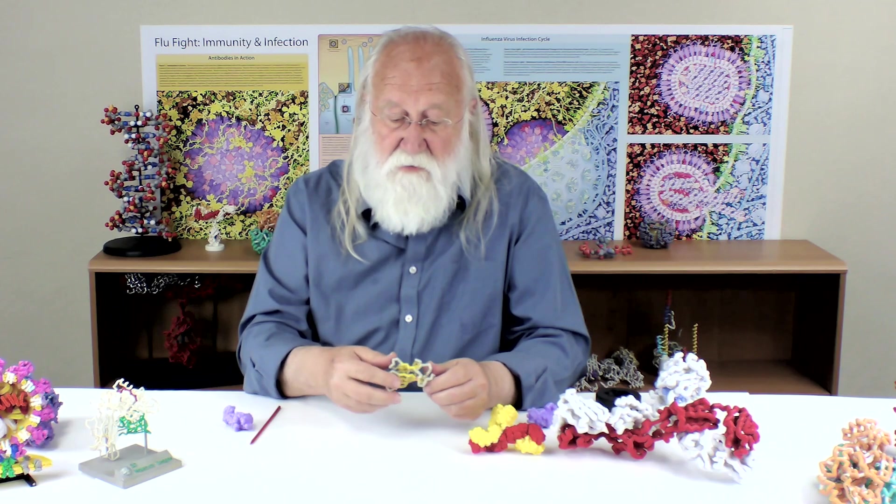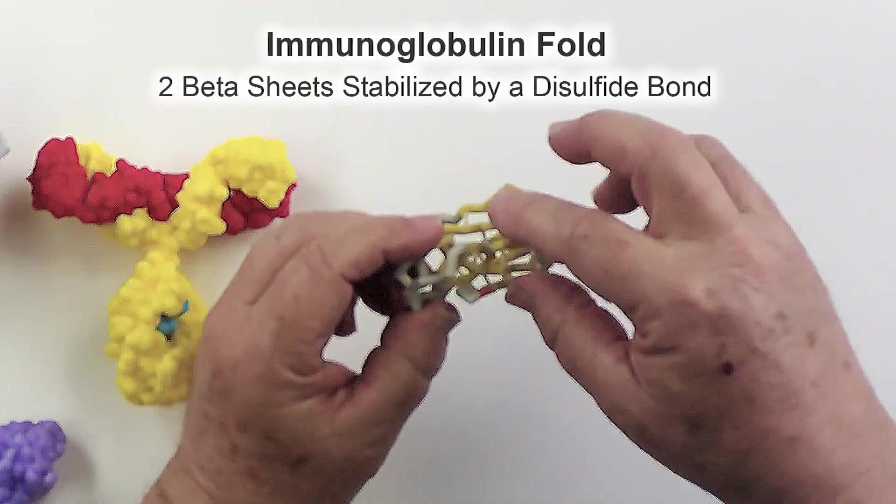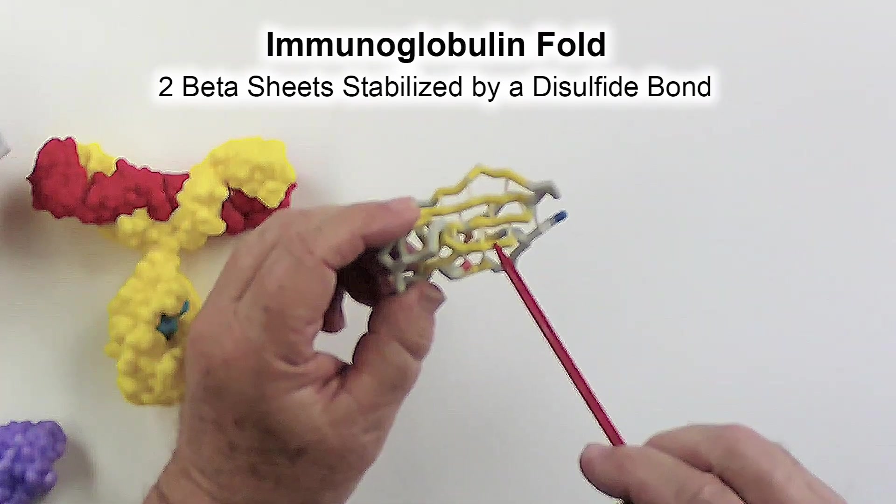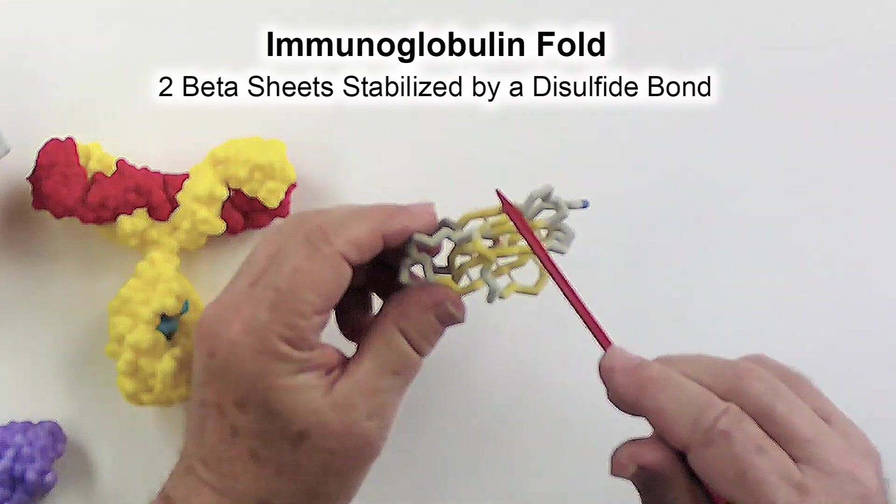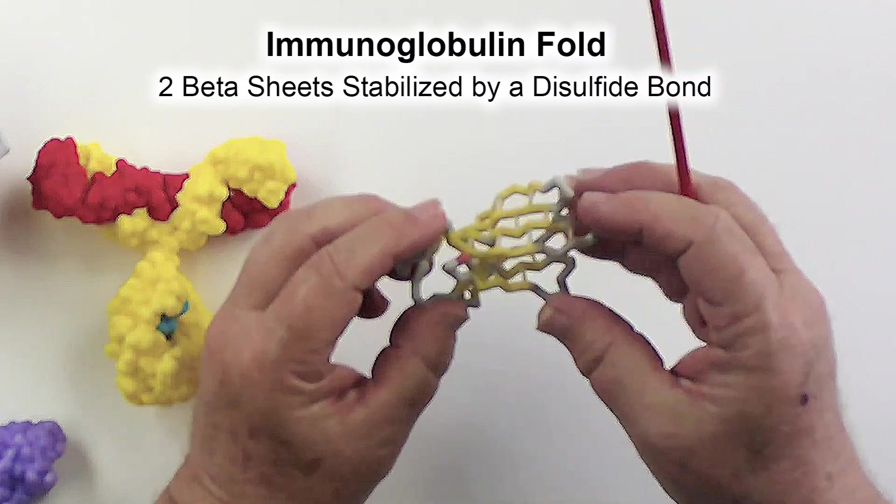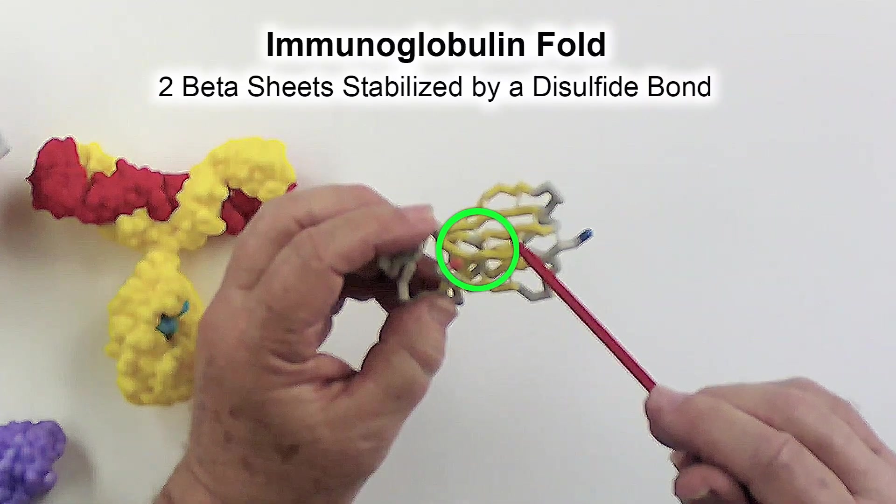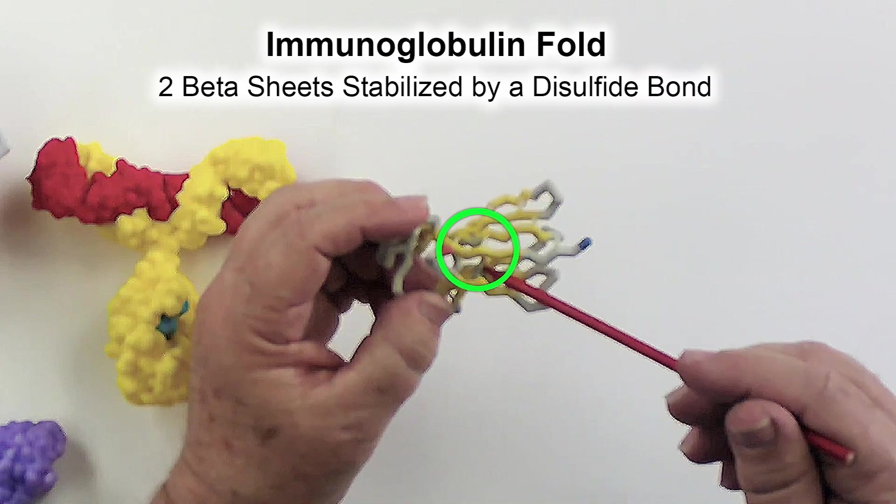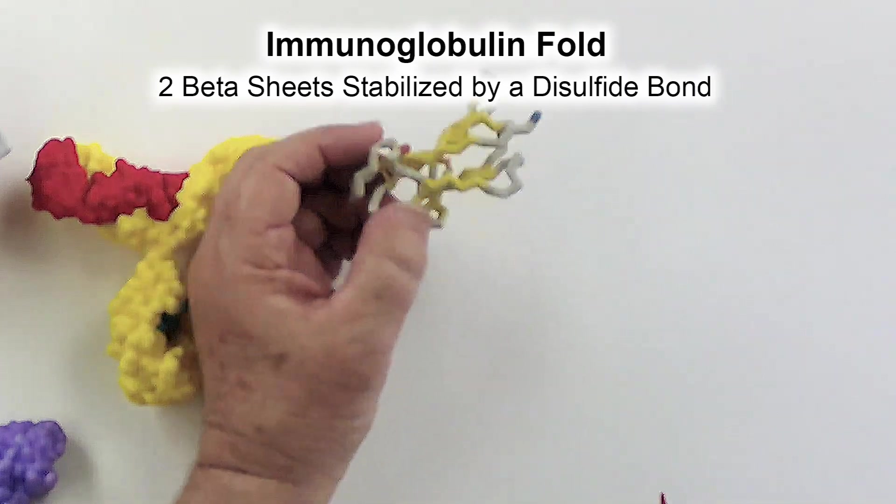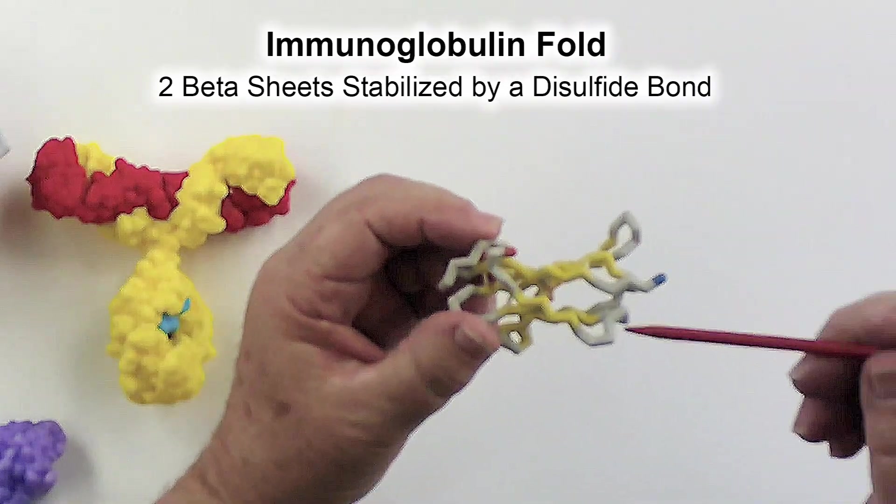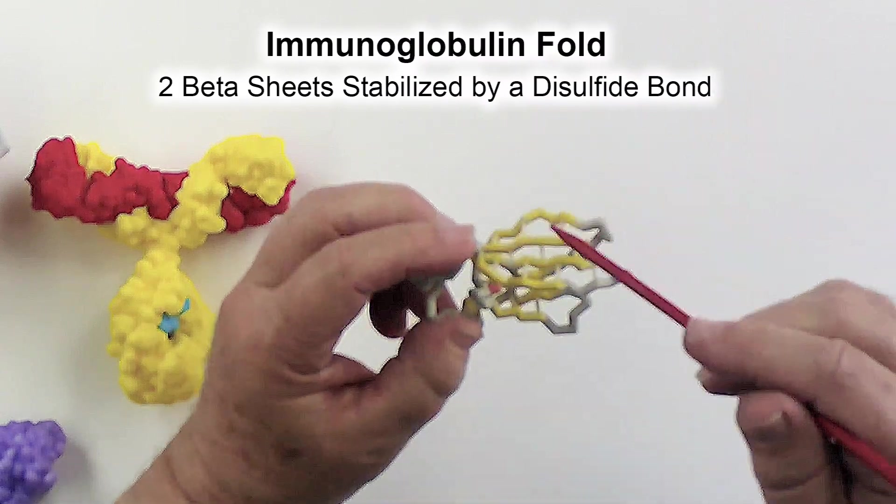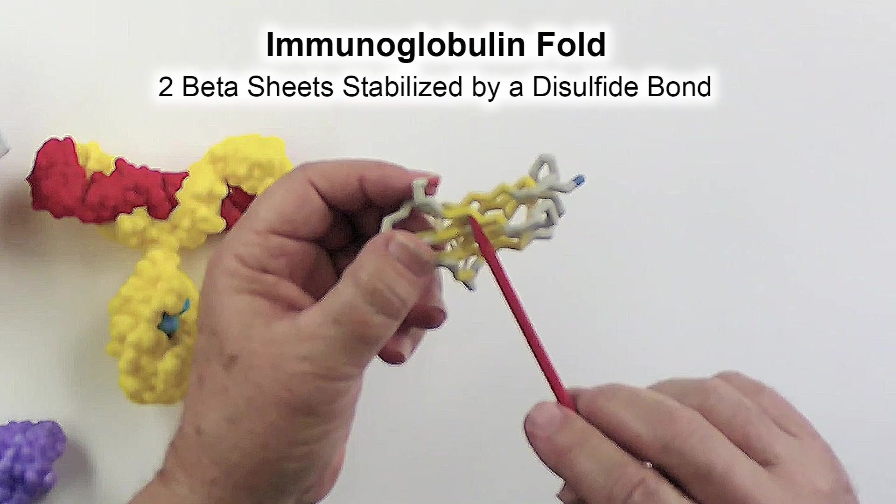An immunoglobulin fold is made up of two beta sheets. This one has four strands in it: one, two, three, four yellow strands of beta sheet. You turn it over, here's the other beta sheet with one, two, three strands. And I don't know if you'll be able to see this, but right in the middle of these two sheets, there's a cysteine on each beta sheet. And you know that cysteines are capable of forming a covalent disulfide bond. So right in the middle, there's a disulfide bond that stabilizes this protein fold that links one beta sheet to the other beta sheet.